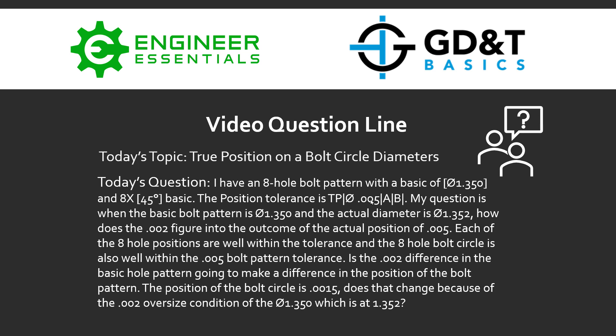Hey everybody, Jason here again with GD&T Basics and our video question line. Today's topic is true position on a bolt hole diameter. Today's question is rather long, but: I have an eight-hole bolt pattern with a basic diameter of 1.350 and eight times 45-degree basic angle between them. The position tolerance is true position of five thousandths diametrically to datums A and B. My question is when the basic bolt pattern is 1.350 and the actual diameter of that bolt pattern comes out to be 1.352, how does the 0.002 difference figure into the outcome of the actual position of 5 thousandths?